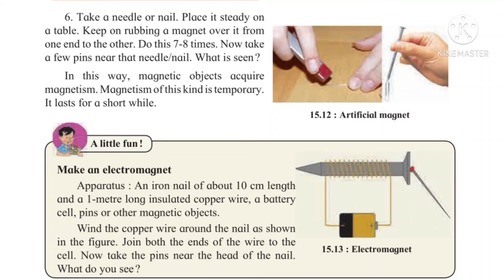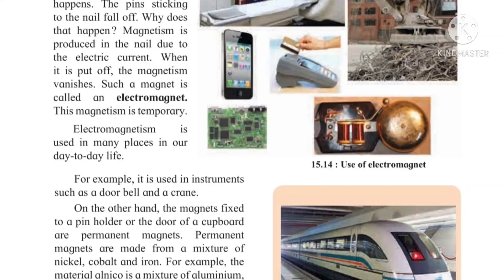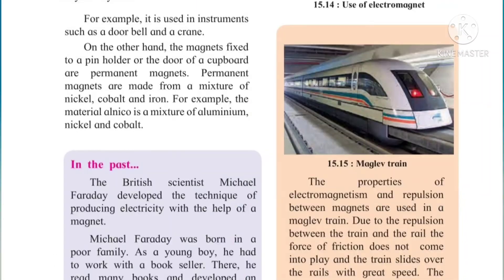In day-to-day life, electromagnetism is used in many places. Magnets are used in many instruments — for example, doorbells, cranes, pin holders, and the doors of cupboards or refrigerators. The magnets used in those are permanent magnets, made from a mixture of nickel, cobalt, and iron. Another type is alnico, which is a mixture of aluminium, nickel, and cobalt.